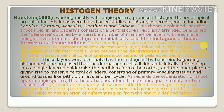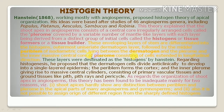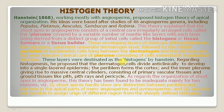The enveloping layers of the stem differentiated into histogens: the outermost uniseriate dermatogen layer, followed by the middle periblem — that is, isodiametric cells lying between the dermatogen and plerome — and the inner massive central core of plerome, consisting of cells extended in the longitudinal direction. These layers were designated as histogens by Hanstein.